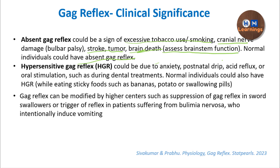To summarize: the gag reflex — or pharyngeal reflex — functions primarily to prevent choking. Related reflexes include the cough reflex and the swallowing reflex. In upcoming videos, we will discuss the swallowing reflex and cough reflex and relate them to the gag reflex for a holistic understanding.